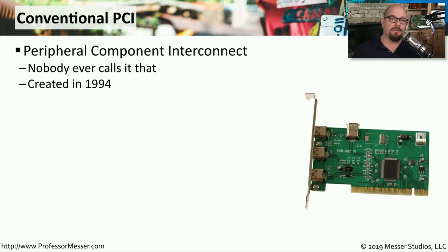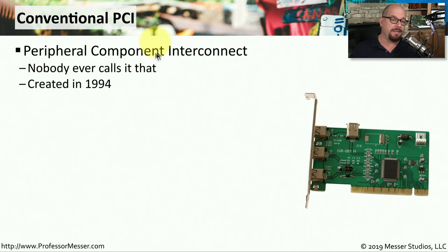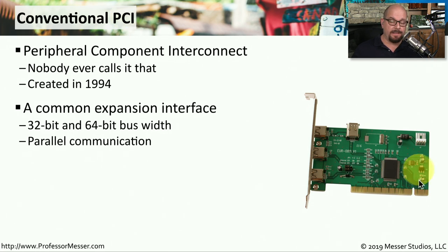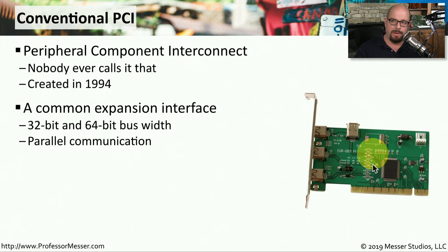The two most common interfaces that you'll see on an expansion bus are the conventional PCI and the PCI Express. Let's first look at the conventional PCI expansion bus. PCI stands for Peripheral Component Interconnect, though we just refer to it as the PCI bus. PCI interface cards communicate over a parallel connection and will support either 32-bit or 64-bit parallel communication.